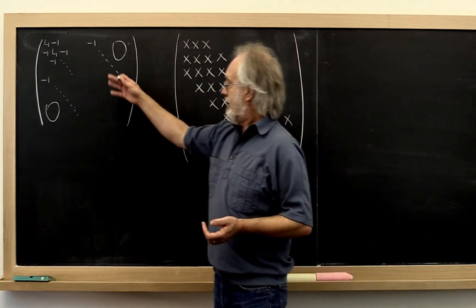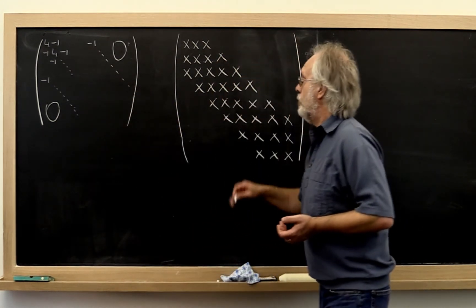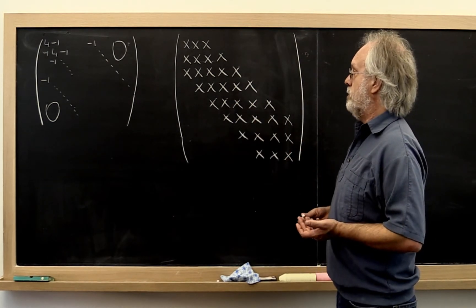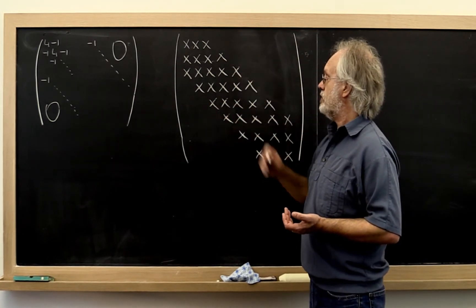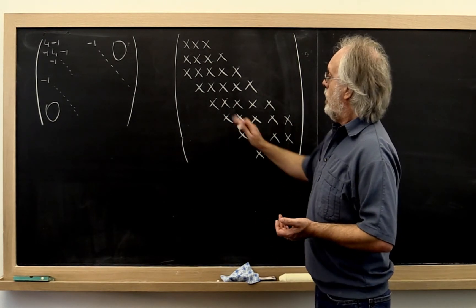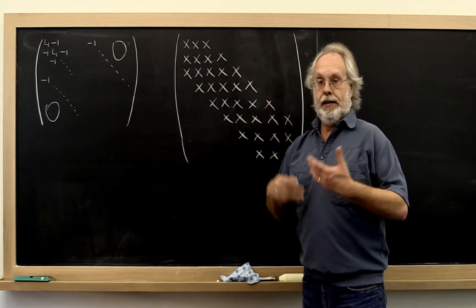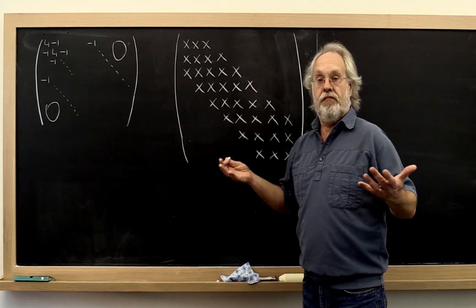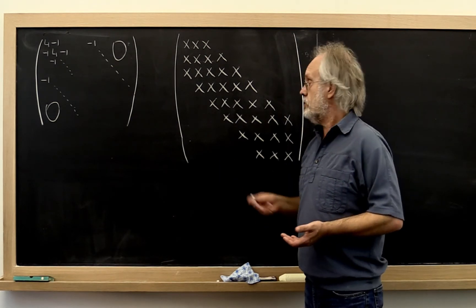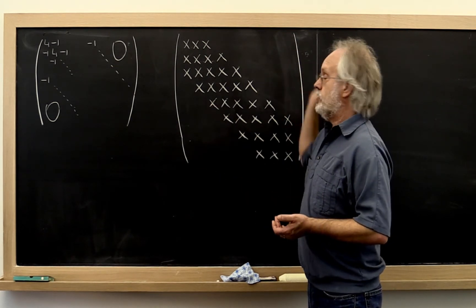Now let's get away from the specific example and look at a general symmetric positive definite matrix that has some kind of banded structure. So here we have a matrix where each x indicates some value that may or may not be zero, but all other values are equal to zero.